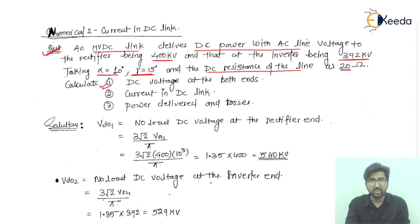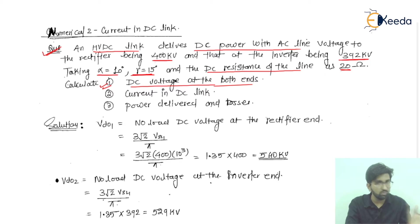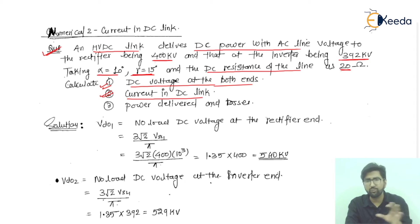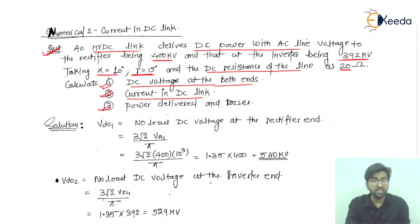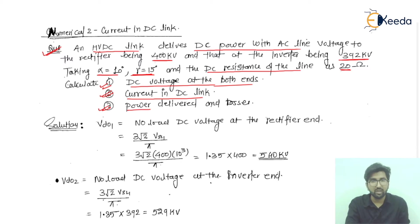For calculations, we need to: first, calculate the DC voltage at both ends — that is, the rectifier side as well as the inverter side. Second, find the current in the DC link. After finding these values, we can easily find the power delivered and the losses.